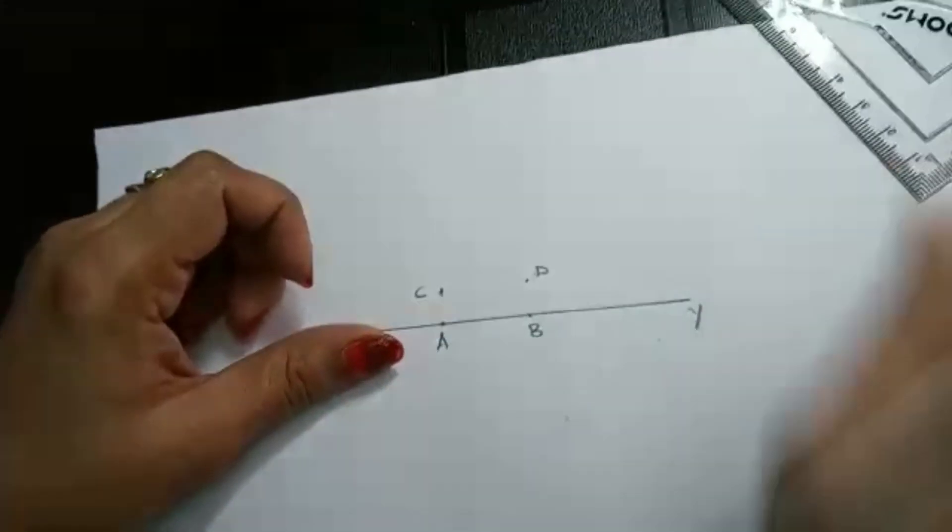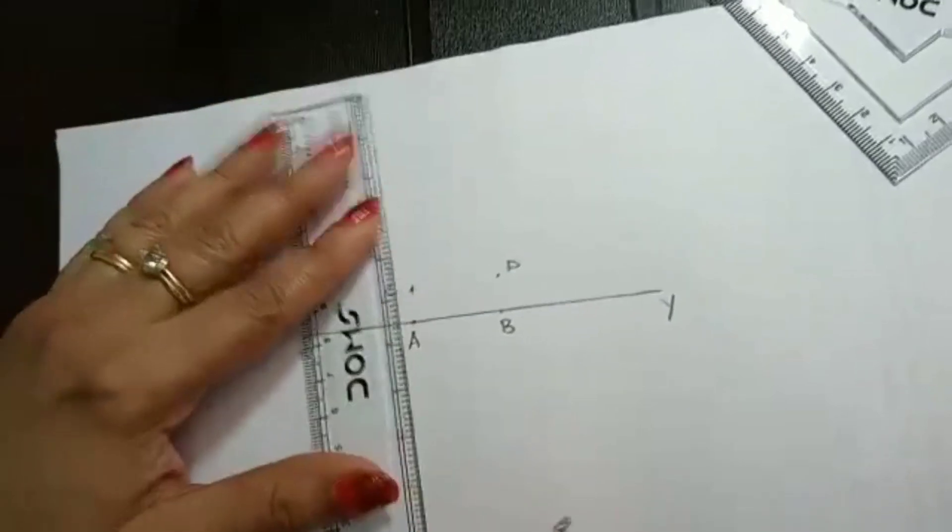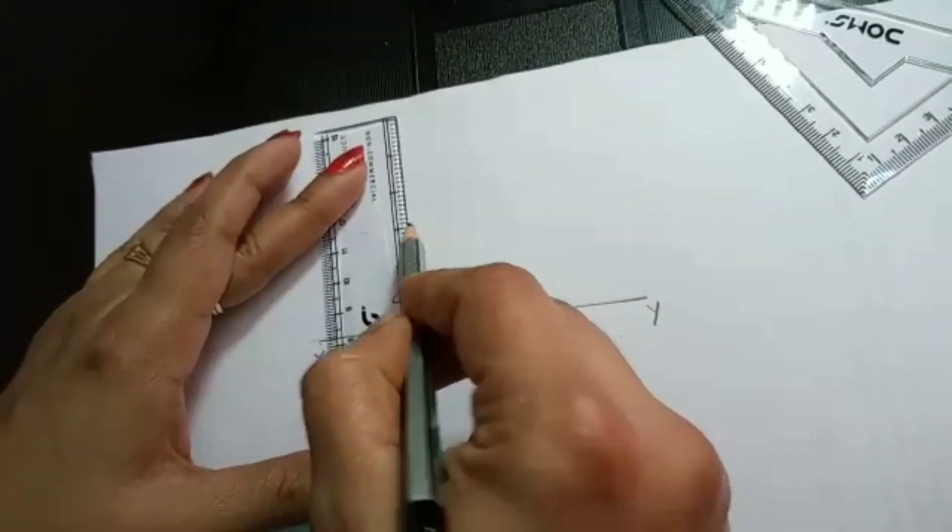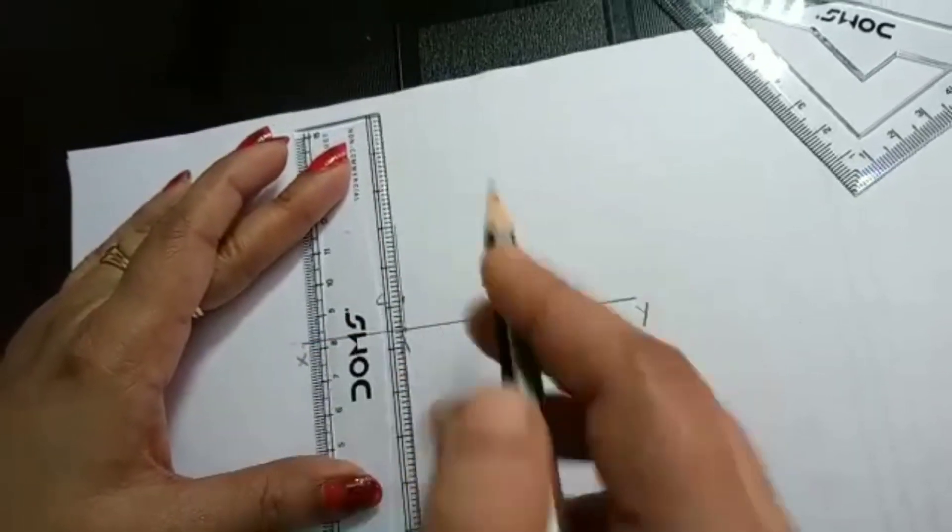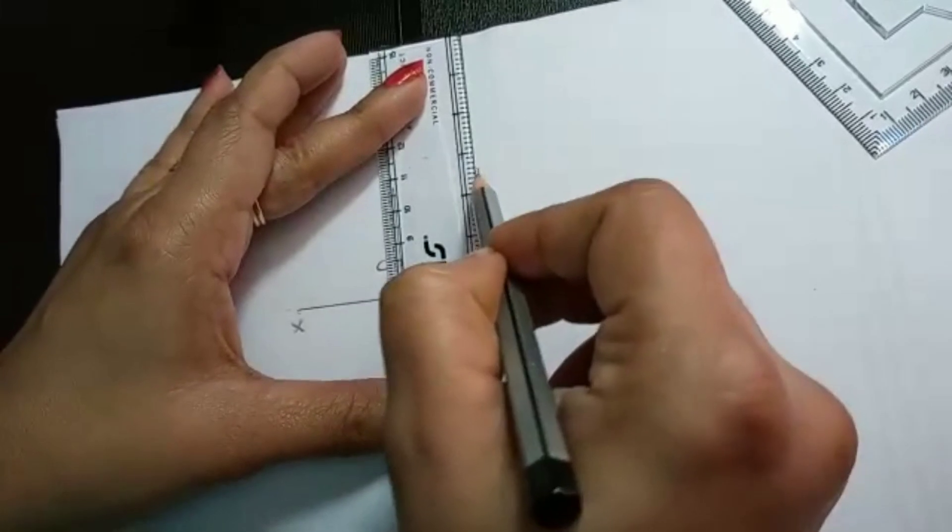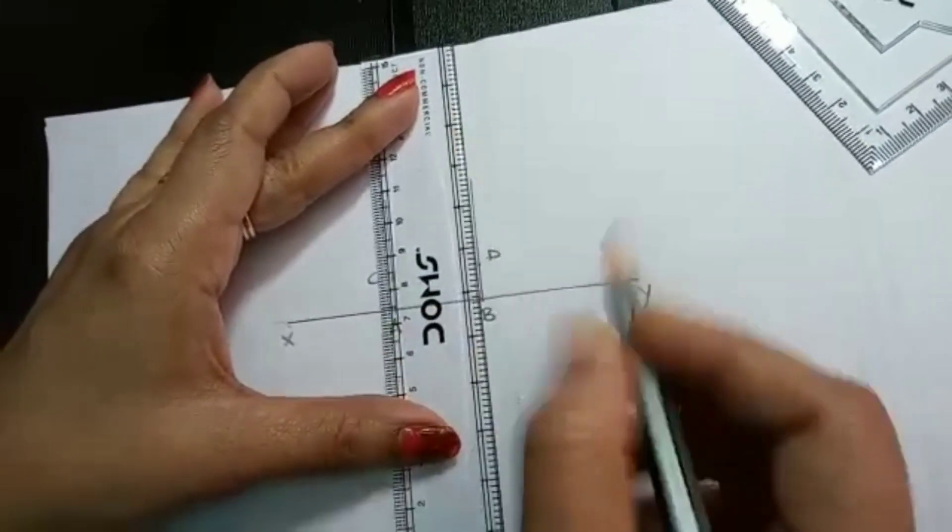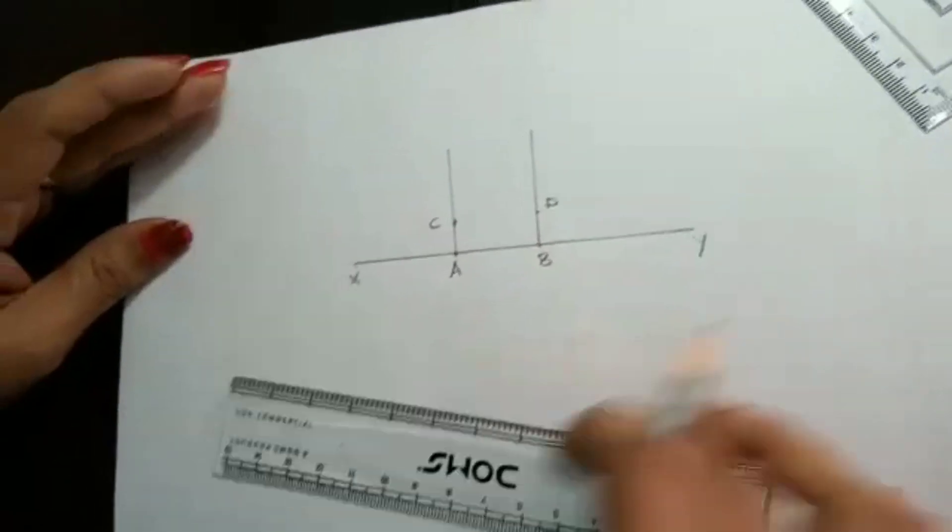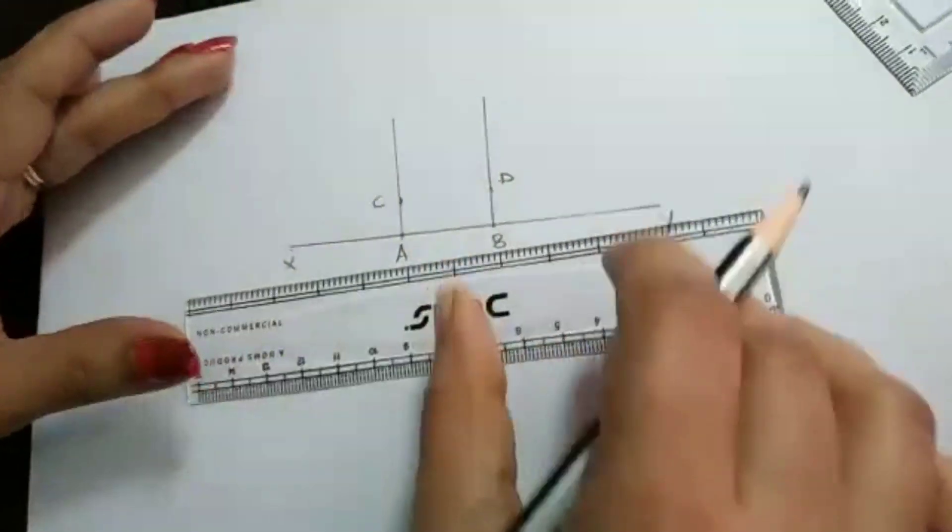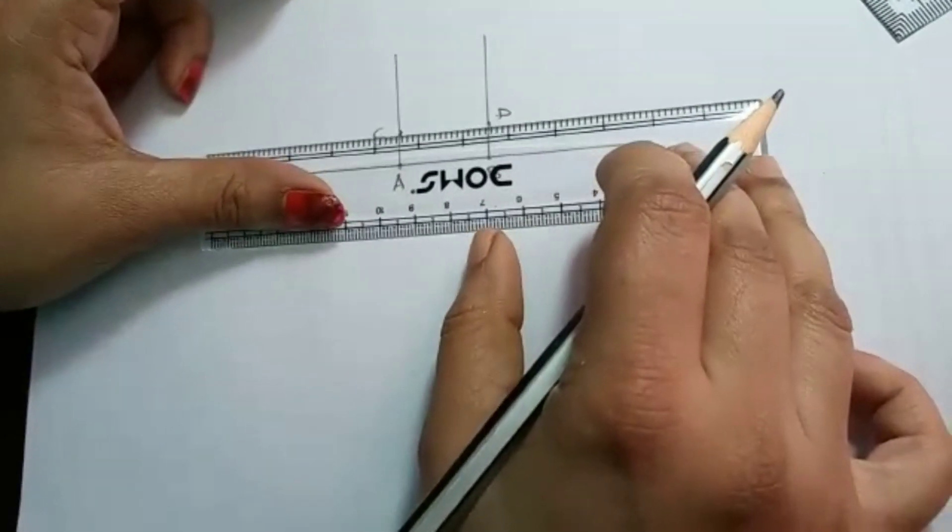So next thing is you have to connect all these things. So A and C you have to connect using a line segment, and B and D you have to connect using the line segment. So now here you got C and D points are already there. You can connect those two points also.